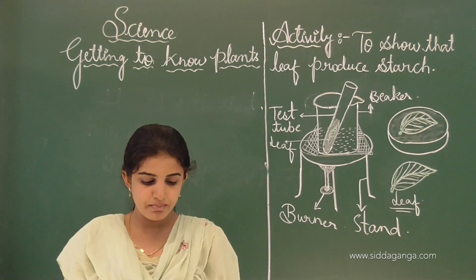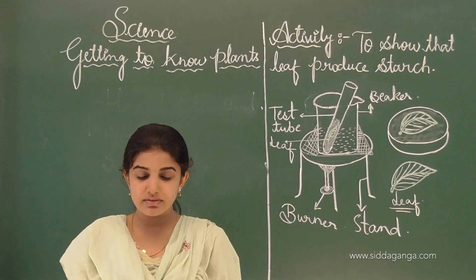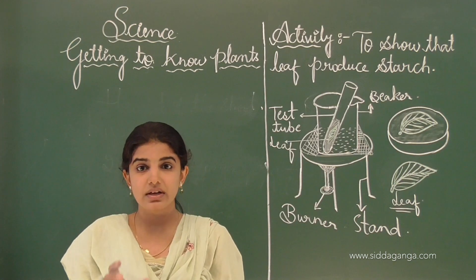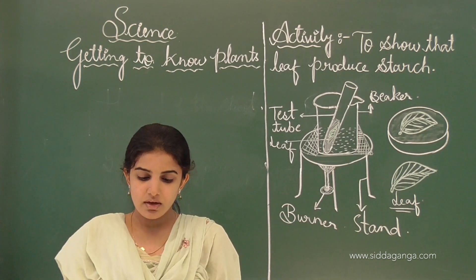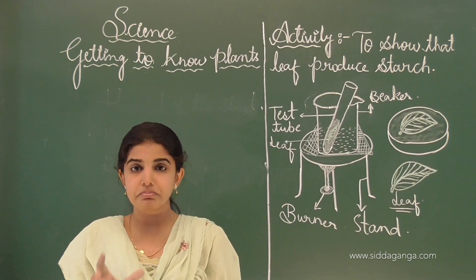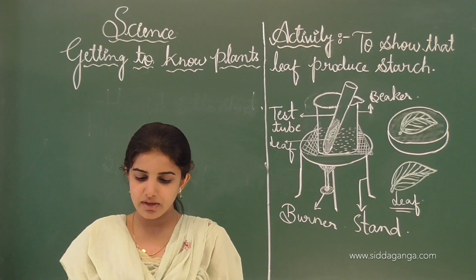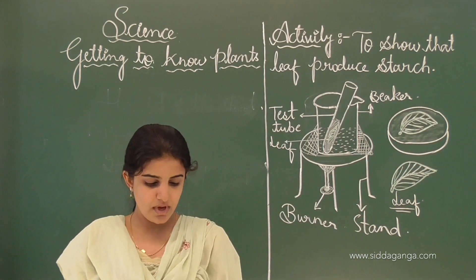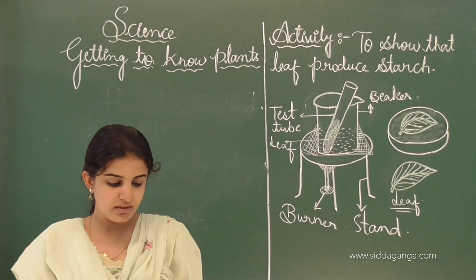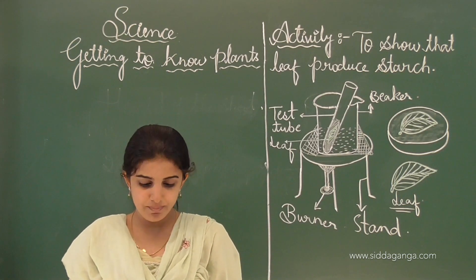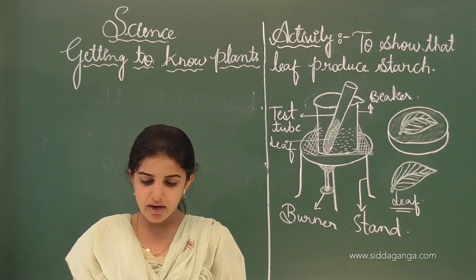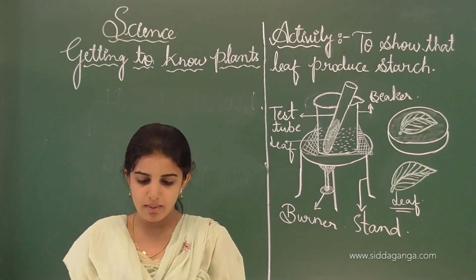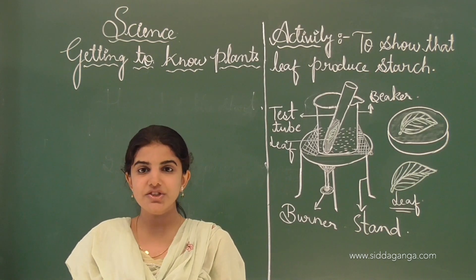Next one is mango. Mango is a much taller plant and its stem is thick in nature — that is why we call it a trunk. The stem is hard and the branches are higher up on the stem. In the category of plants it is a tree. Next one is lemon. Lemon is a slightly taller plant with a hard stem, and the branches appear at the base of the stem. Category of the plant: it is a shrub.